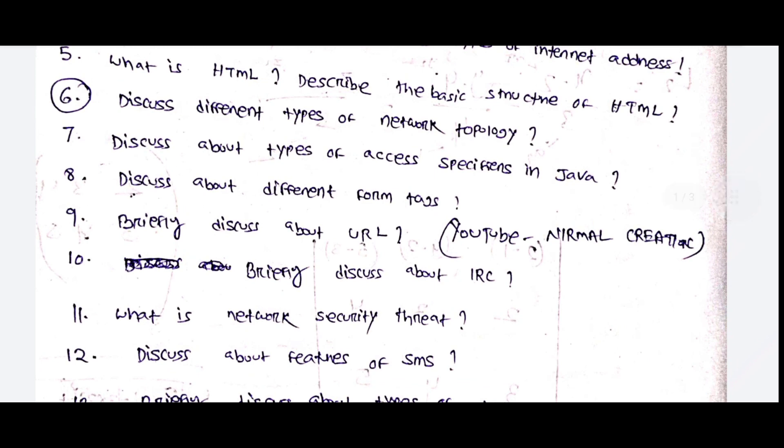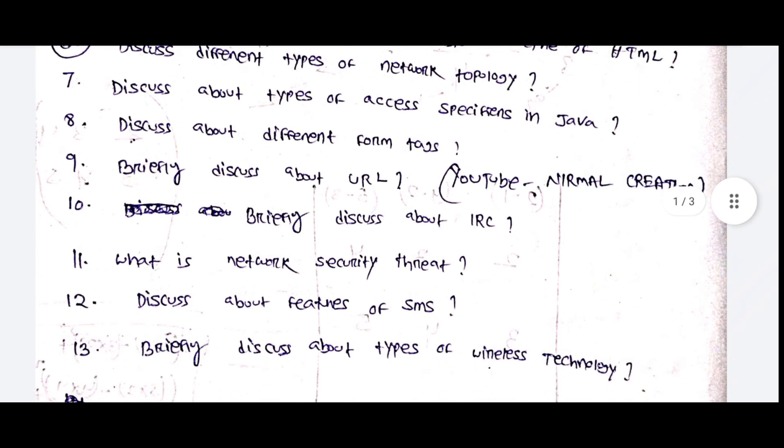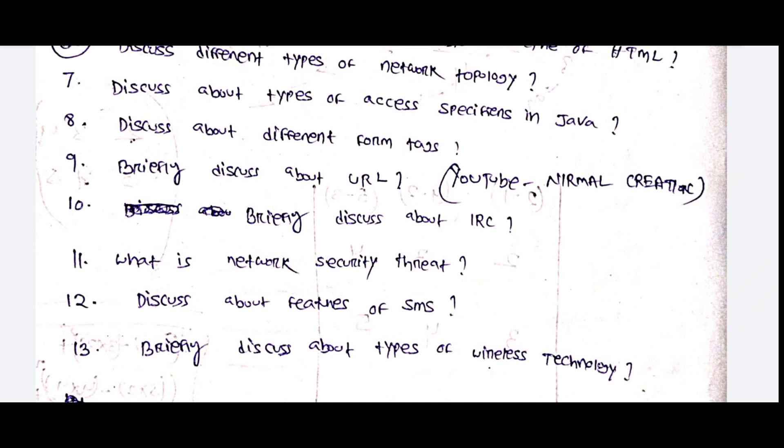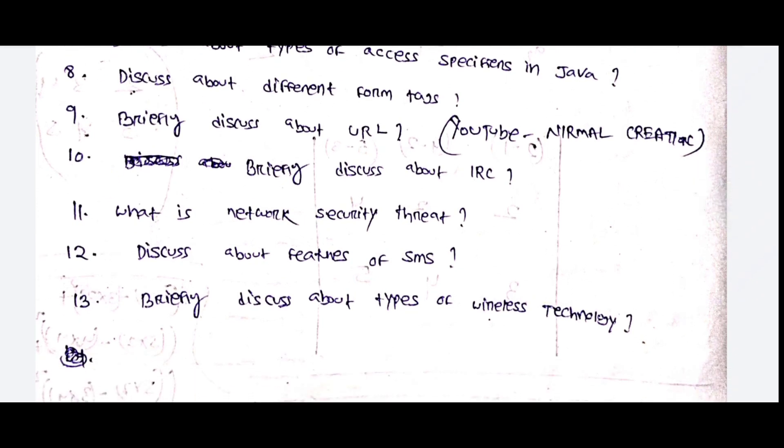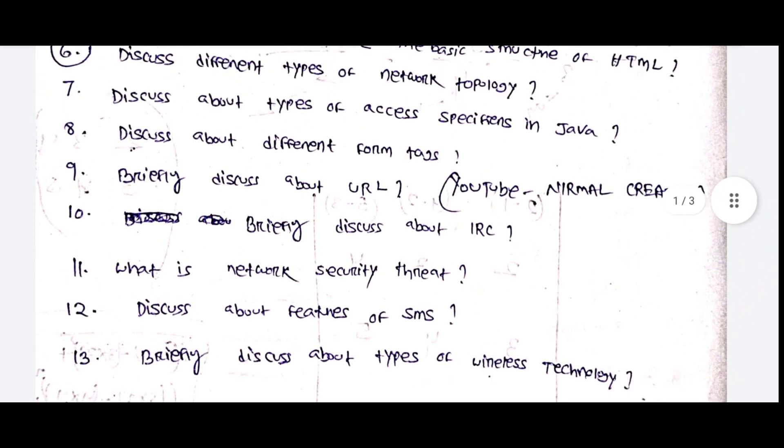Discuss different types of network topology. Important question. Discuss about types of access specifiers in Java. Discuss about different form tags. Briefly discuss about URL. Briefly discuss about IRC.